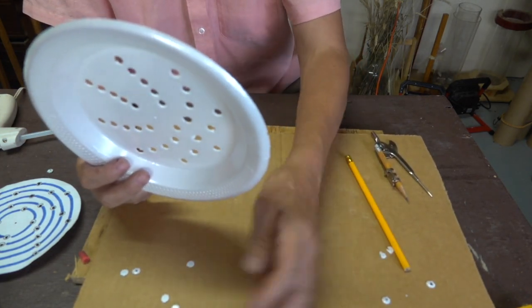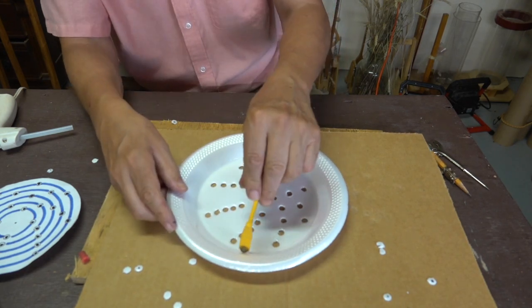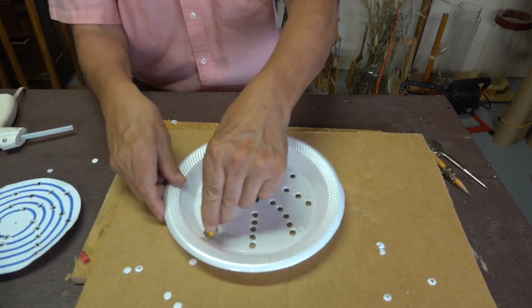With the holes all cut out, the next step is to remove the rest of the plate that's not needed. For that I'll either use a circle cutter or some scissors.